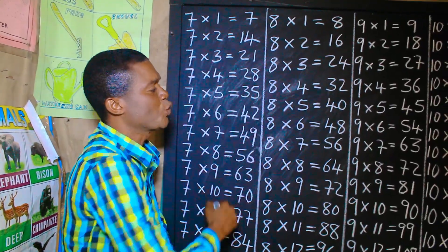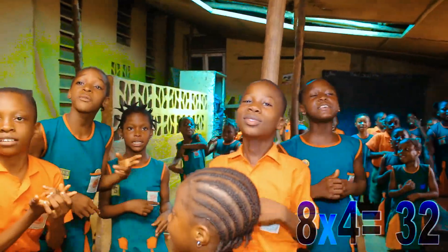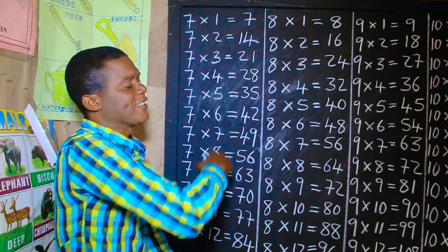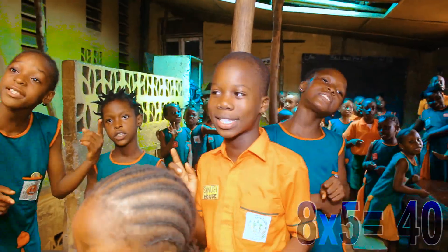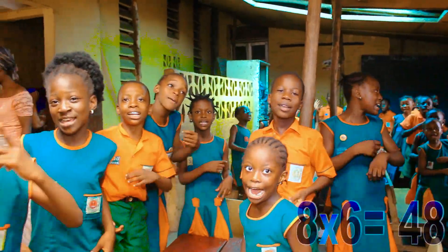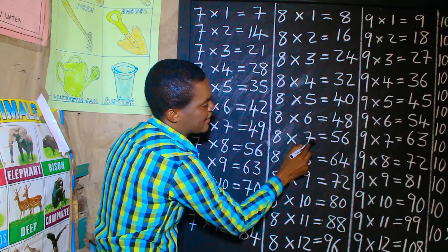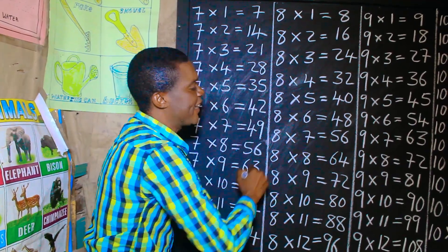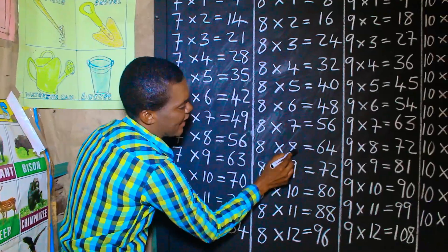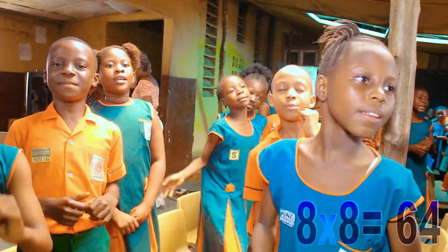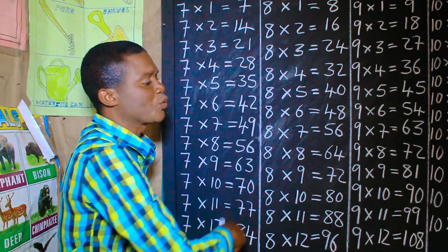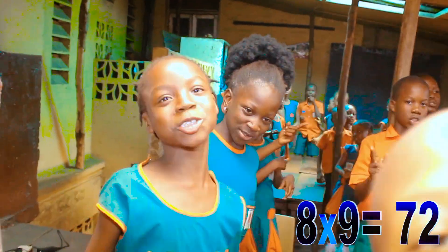8 times 4 is 32. 8 times 5 is 40. 8 times 6 is 48. 8 times 7 is 56. 8 times 8 is 64. 8 times 9 is 72.